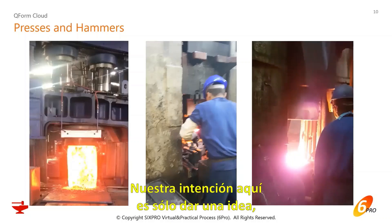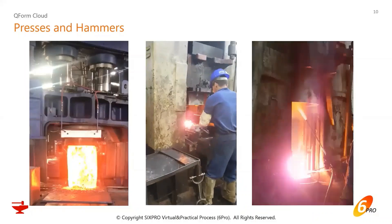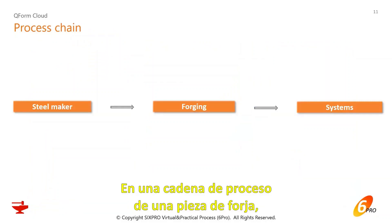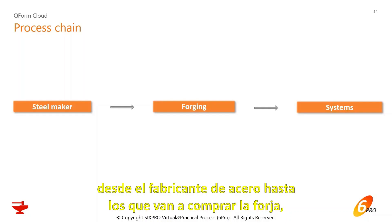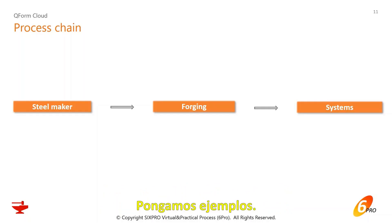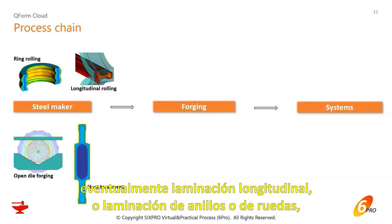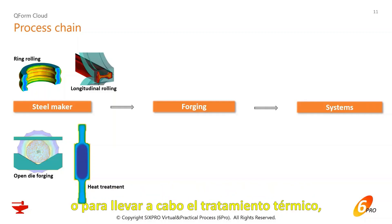The idea is just to give an impression of the equipment, especially to those who have never seen it. In a process chain of a forging part — from the steel maker to the ones who purchase the forging — Keyform can be used in every segment, in every company in this chain. For example, in a steel maker they usually forge bars, roll profiles, do longitudinal rolling, ring rolling, or conduct heat treatments.